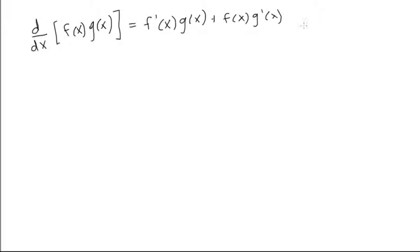Now, a shorter way to write this again, we could say that the derivative of f of x times g of x is simply f prime g plus f g prime.